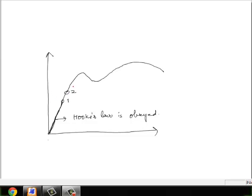Graph between 1 and 2 is not a straight line, but is slightly curved. But still the material has elastic property and on removal of load there is no permanent deformation. This point 2 is called as elastic limit point and corresponding stress is called as elastic limit stress.